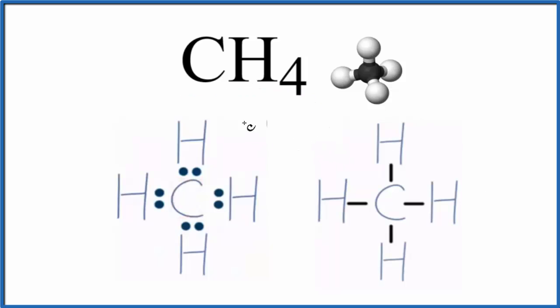So we start with Lewis structures. This is one way you could draw it with the electrons, a pair of electrons between atoms, or you could put a line to represent two electrons. You'll see it both ways.